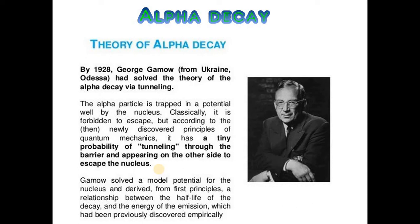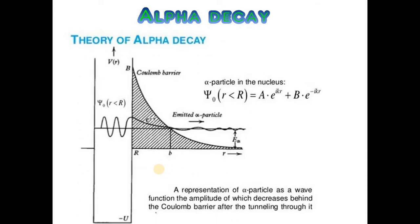Gamow solved a model potential for the nucleus and derived from first principles a relationship between the half-life of the decay and the energy of the emission, which had been previously discovered empirically. The wave function shows alpha particles in the nucleus.